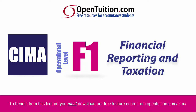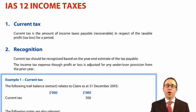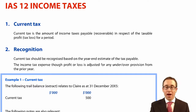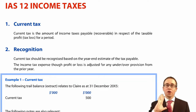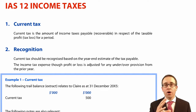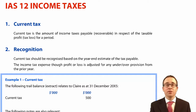This is a lecture from OpenTuition. To benefit from the lecture, you should download the free lecture notes from OpenTuition.com. This short session goes through income taxes, which is something you have seen and done before in your certificate level accounting paper, and revises what current tax is before we then look at deferred tax in F2. So what we have to look at here is current tax — essentially what you are due to pay to revenue and customs, and what we need to be able to do is account for that amount payable.